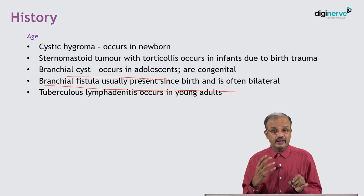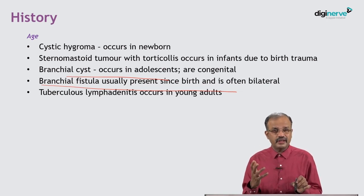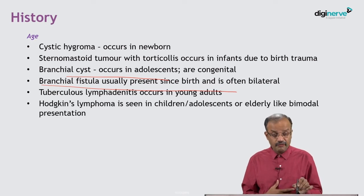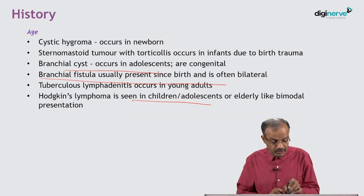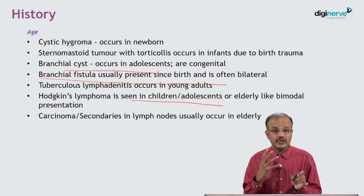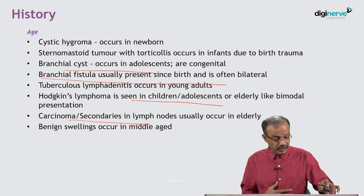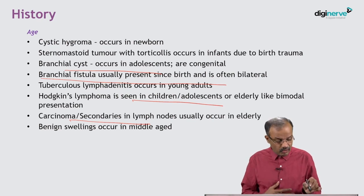Tuberculous lymphadenitis occurs in young individuals, maybe in their 20s and 30s, with different presentations. Hodgkin's lymphoma is a primary malignant lymphoproliferative disease of the lymph nodes with a bimodal presentation — occurring in younger age groups and the elderly. Carcinoma secondaries, or metastatic disease in neck nodes, is not uncommon and occurs in the elderly. Benign cysts occur in middle age.